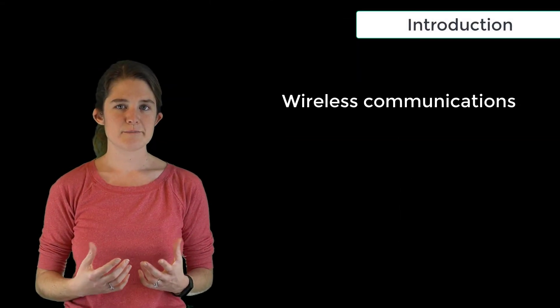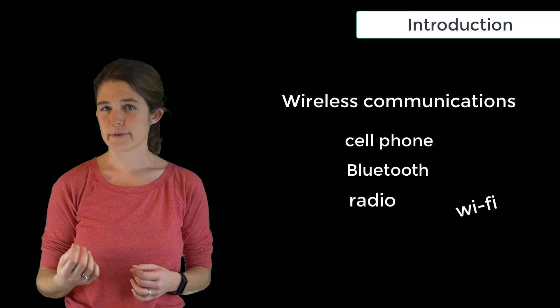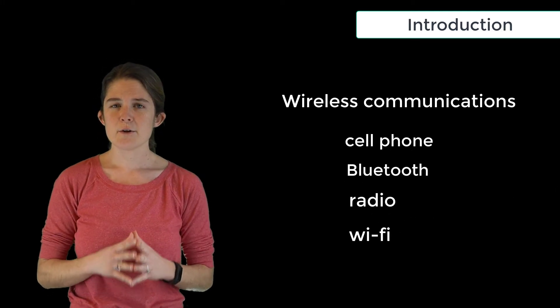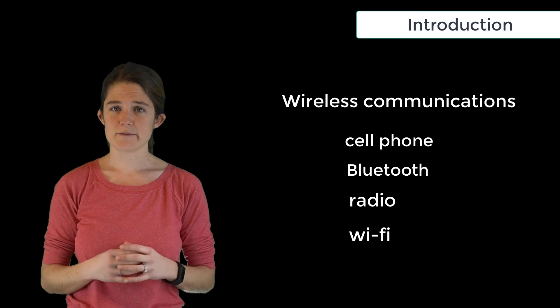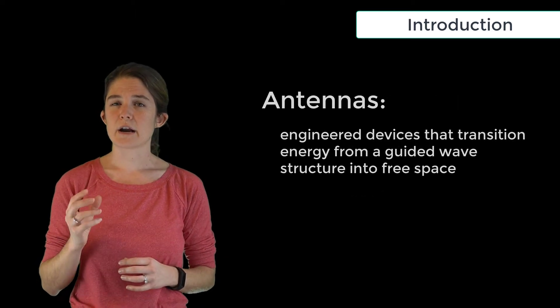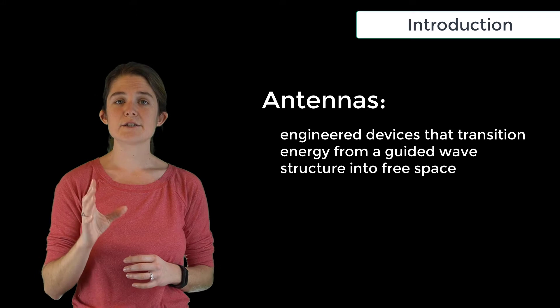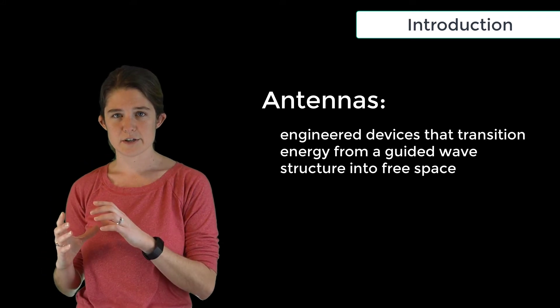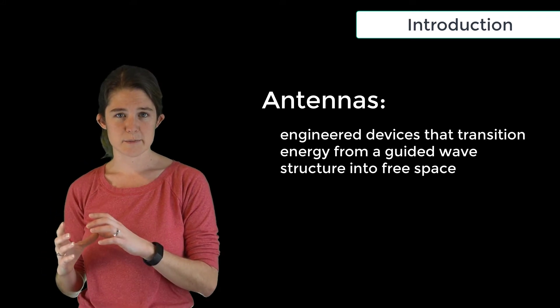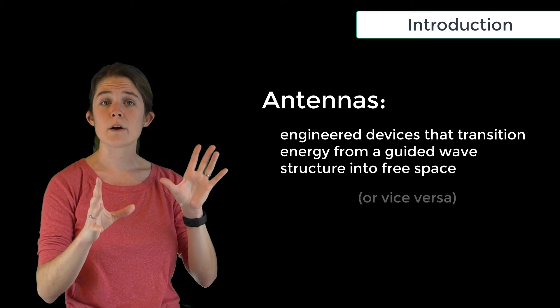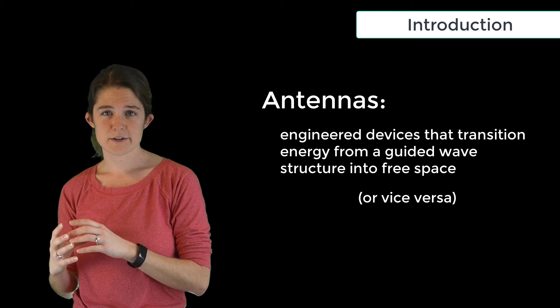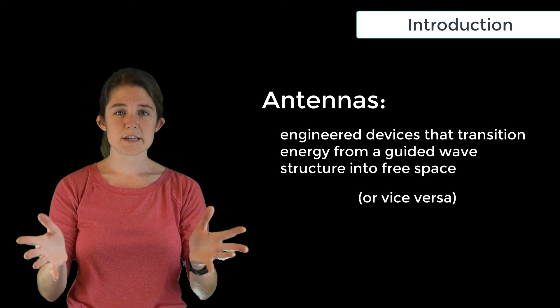Wireless communications such as cell phone, Bluetooth, radio, and Wi-Fi signals make use of antennas to send and receive electromagnetic waves. Antennas are engineered devices that transition energy from a guided wave structure, such as a microstrip transmission line or coaxial cable, into free space, or from free space into a guided wave structure. These are known as the transmit and receive modes of the antenna.